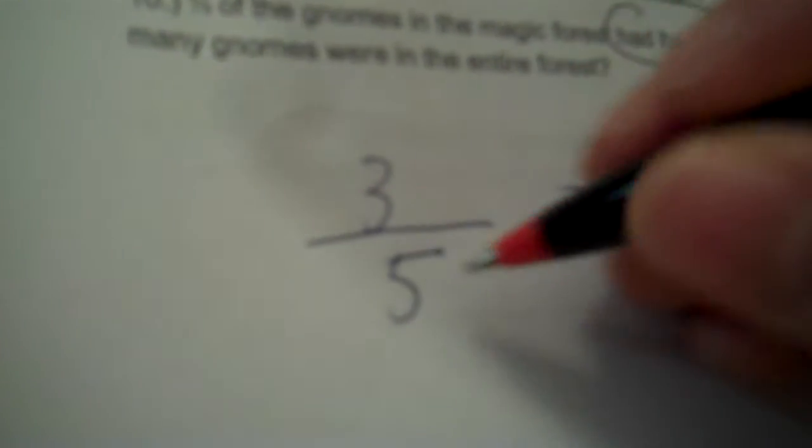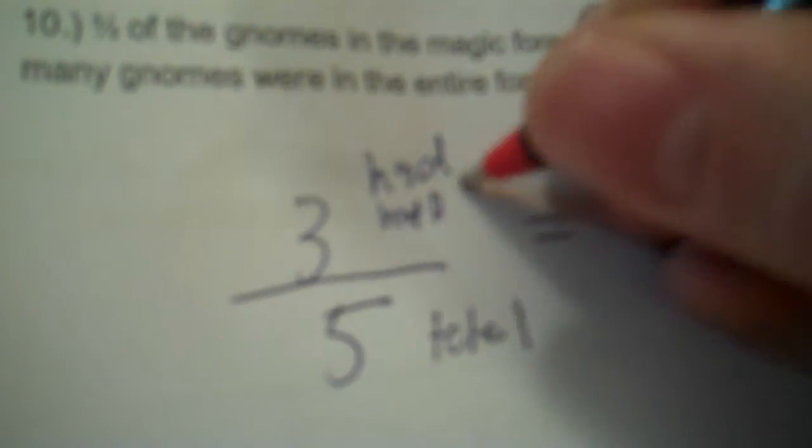Number 10. Three-fourths of the gnomes in the magic forest had happy faces. If 16 gnomes had happy faces, how many gnomes were in the entire forest? This three-fifths is a ratio. Now you need to label. The bottom's your total, always is. Bottom's total. Now, the three is the part I have circled that had happy faces. So then total, same thing over here. Had happy faces. How many gnomes had happy faces? Well, we know that. We know it's 60, so I'm finding the total. So I take 5 times 60 and divide by 3. 100 gnomes.